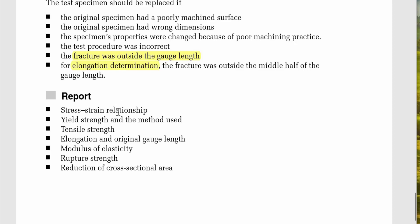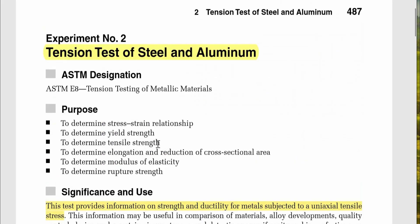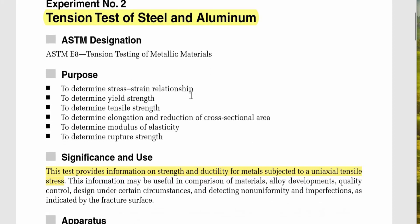In your report, you should include: the stress-strain relationship, yield strength and the method used, tensile strength, elongation and original gauge length, modulus of elasticity, fracture strength, and reduction of cross-sectional area. This concludes our experiment on ASTM E8, the tension testing of metallic materials.